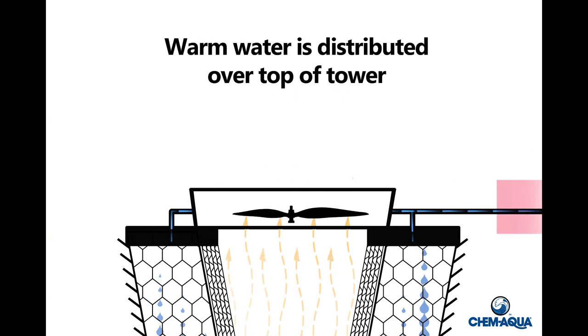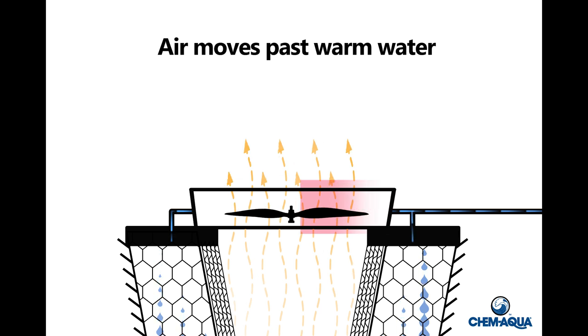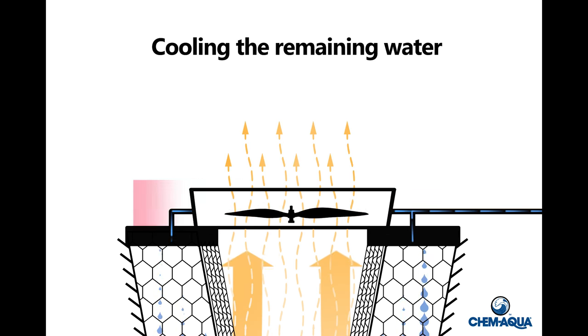Warm water is distributed over the top of the tower, where air moves past the warm water, evaporating a portion of the water, cooling the remaining water.